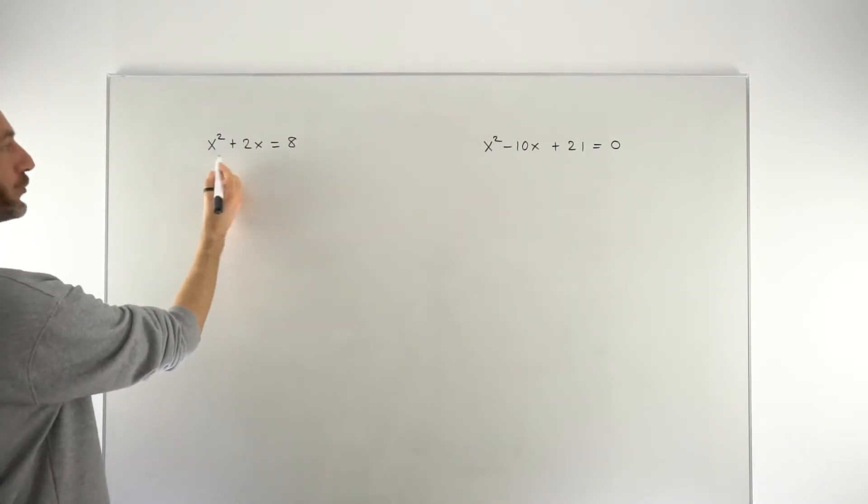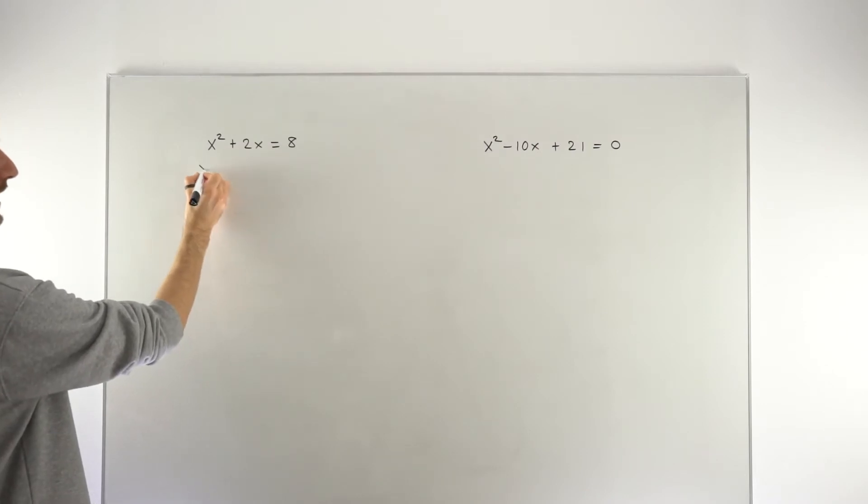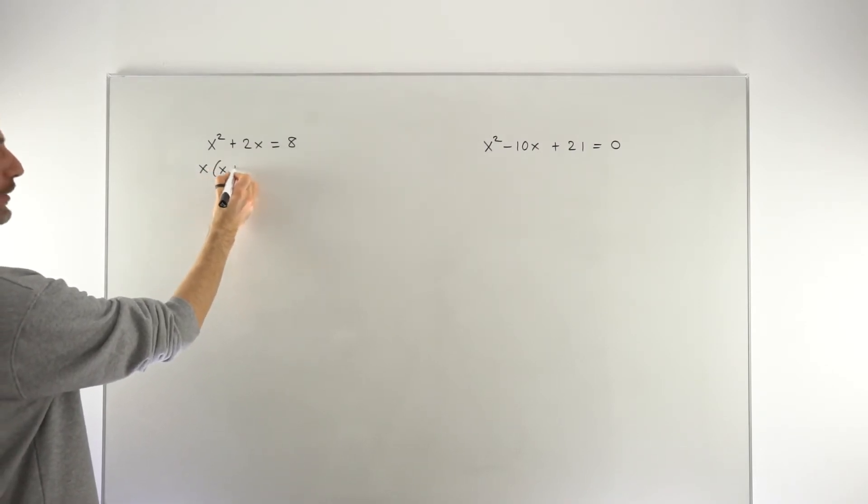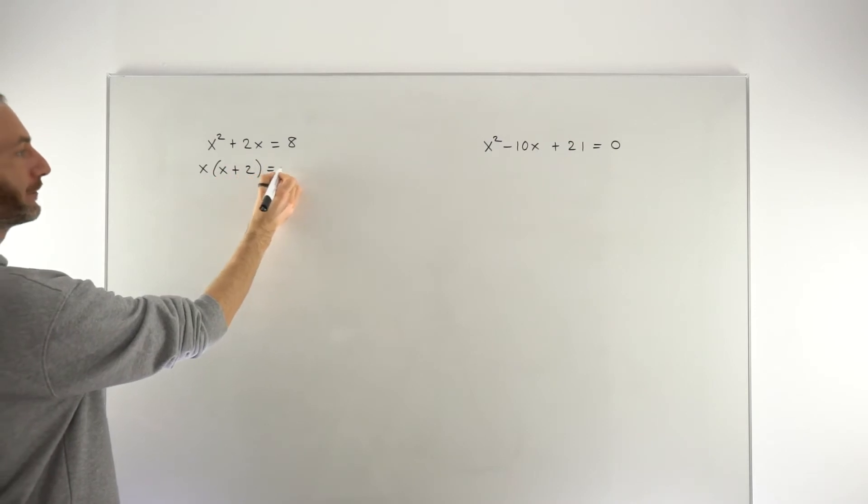So they'll say hey wait a minute I know what to do here. I can pull out a common factor of x. So they'll go x and then open a bracket and then they'll go x plus 2, usually getting that factorising correct.